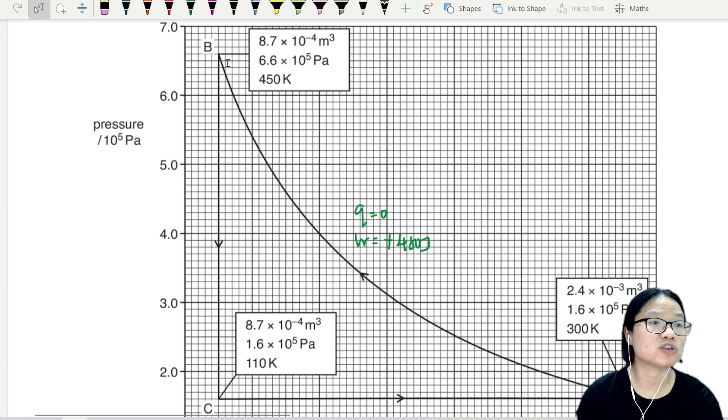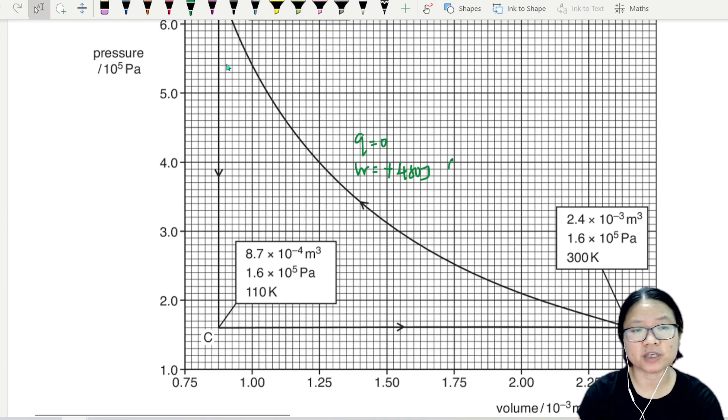Furthermore, this is positive 480 because from A to B, which is up here, the volume decreases. That's why this is positive. This is A to B for this transformation here, this process here.